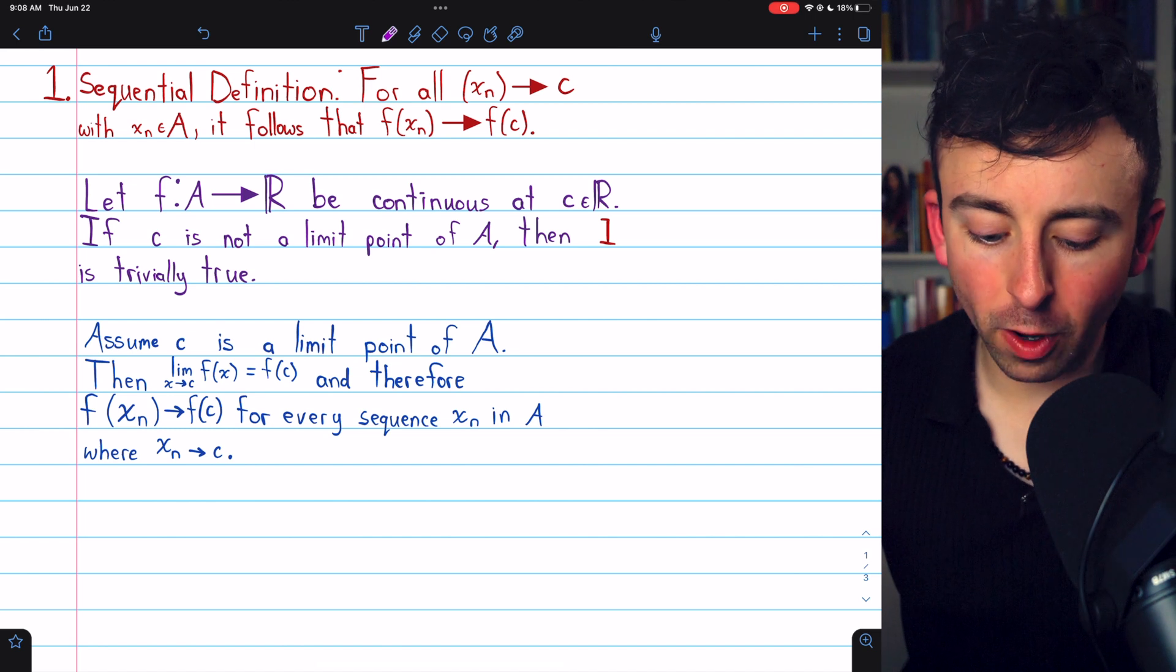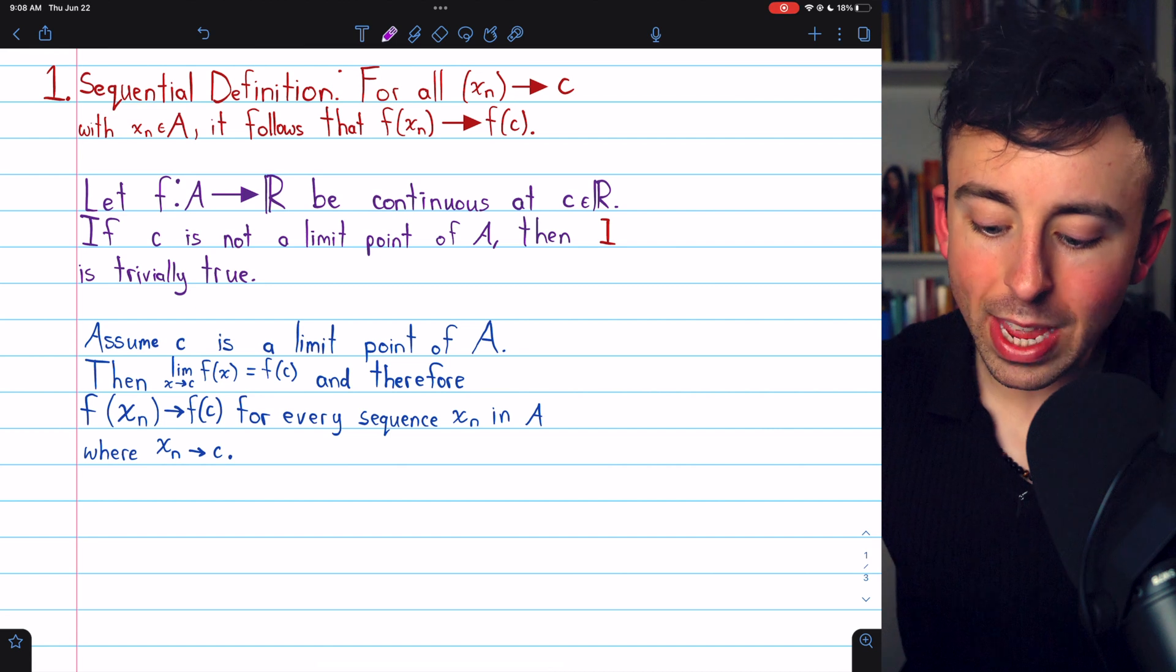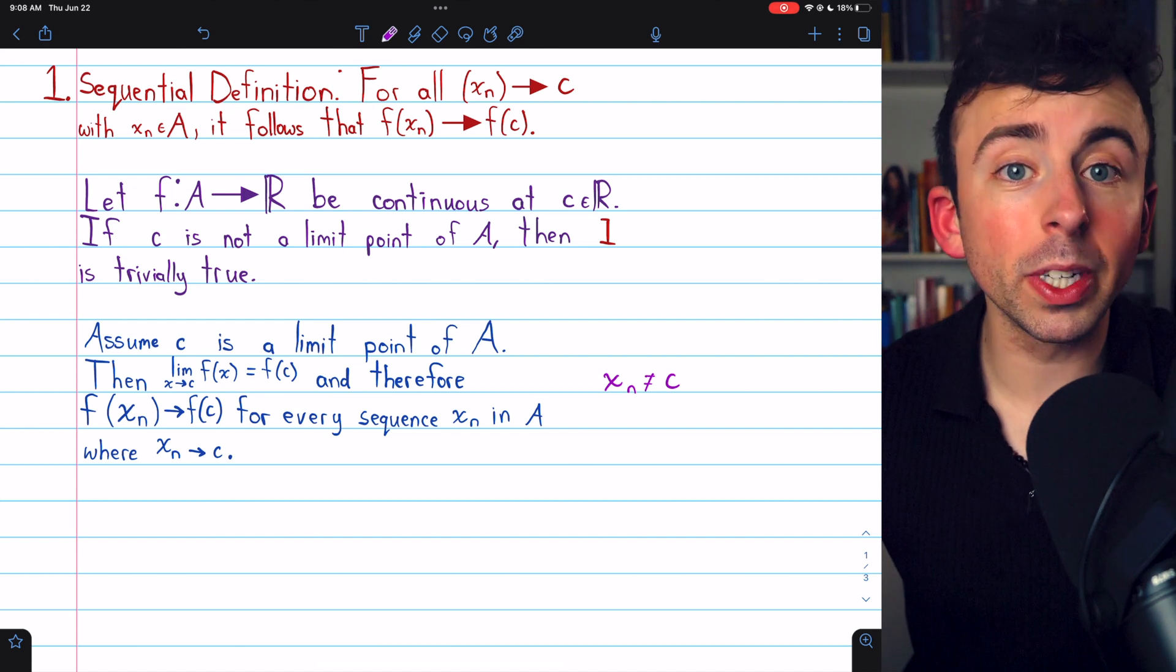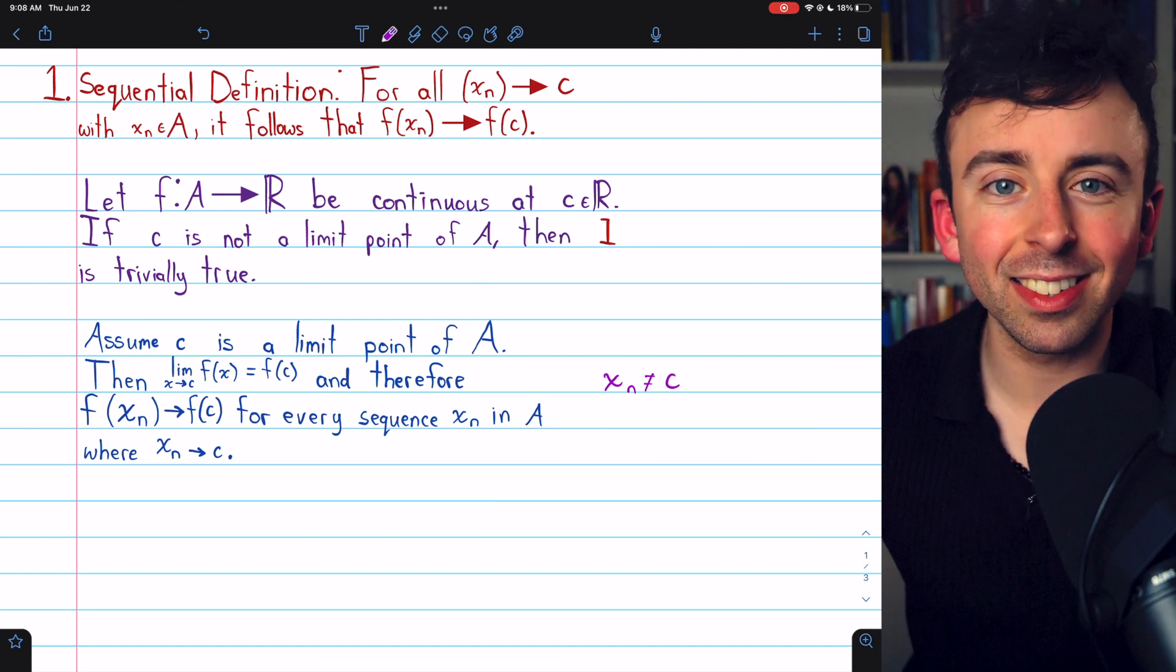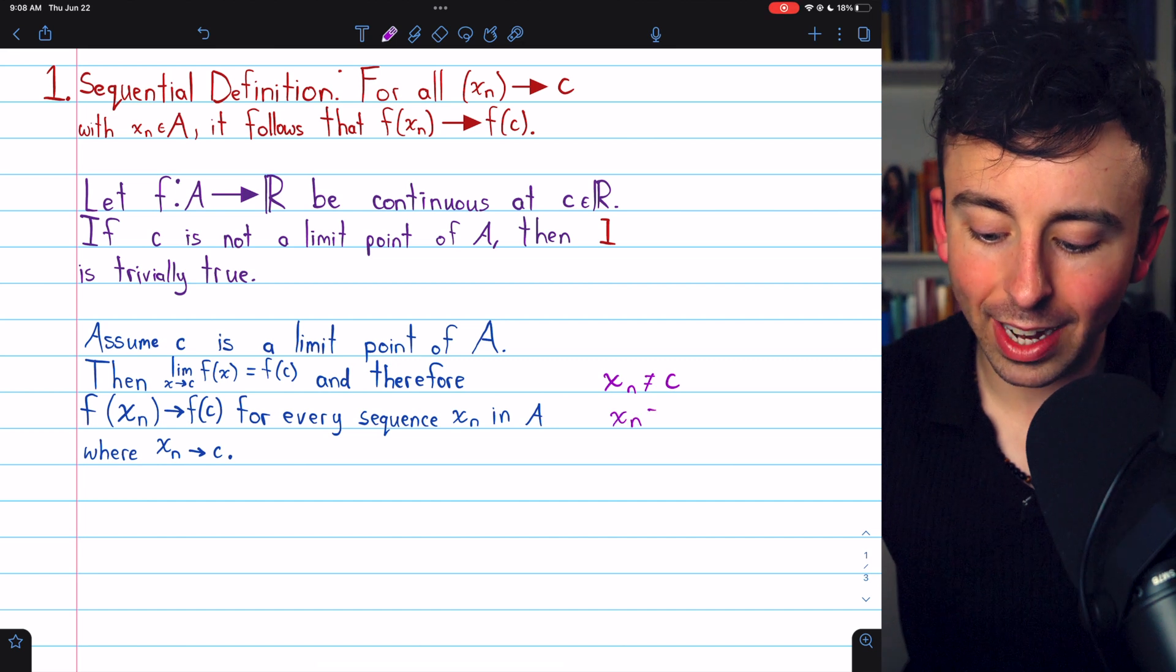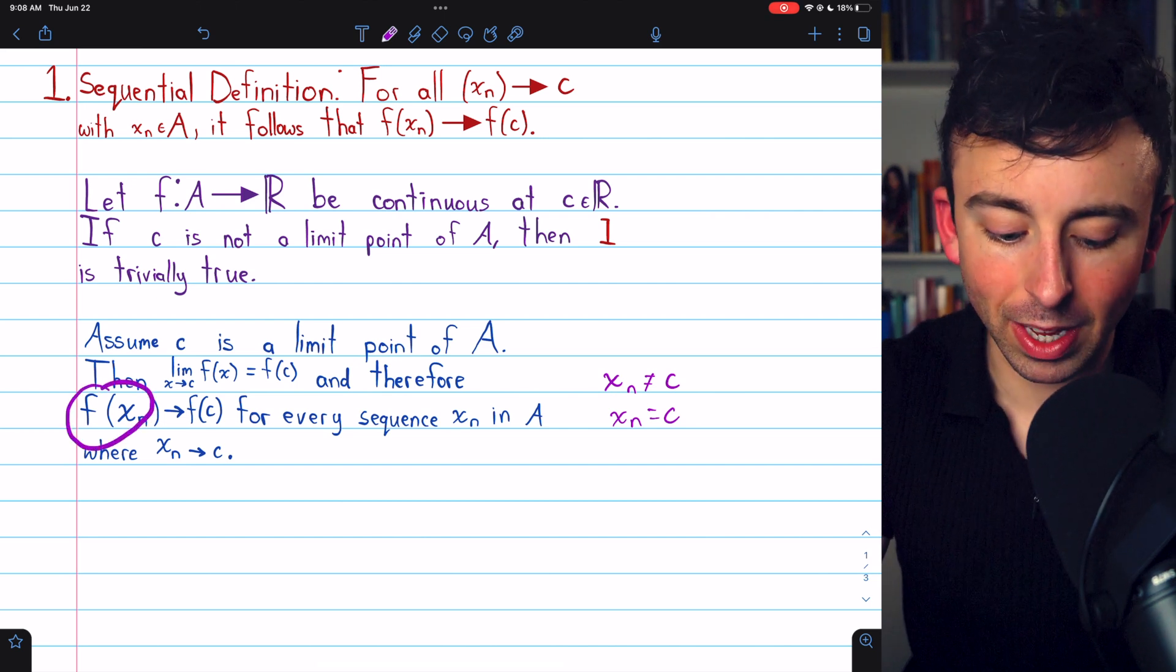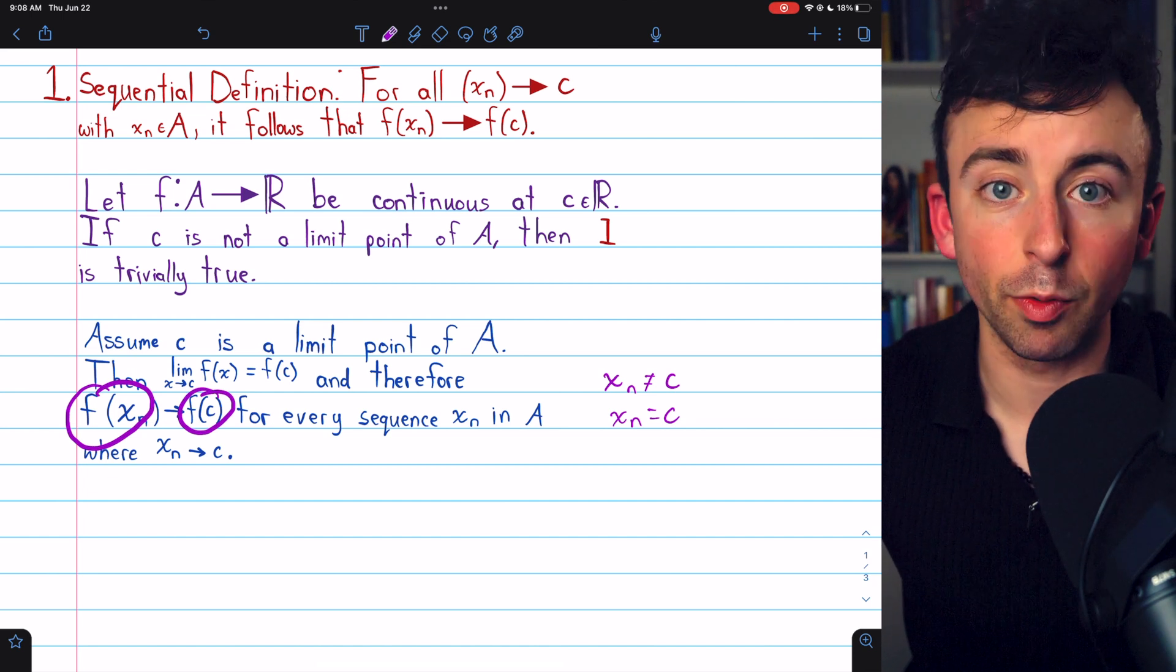There is one side note I should make here. When we proved this result connecting sequence limits and functional limits, we had the assumption that every term of the sequence was not equal to the limit point c because we were talking about functional limits. We wanted to approach c but not have x equal c. Now, in this case, it's totally fine if xn is equal to c but that does not present any complications because certainly if xn is equal to c, then its image will equal f of c. So, that's not going to have an effect on a sequence's convergence.